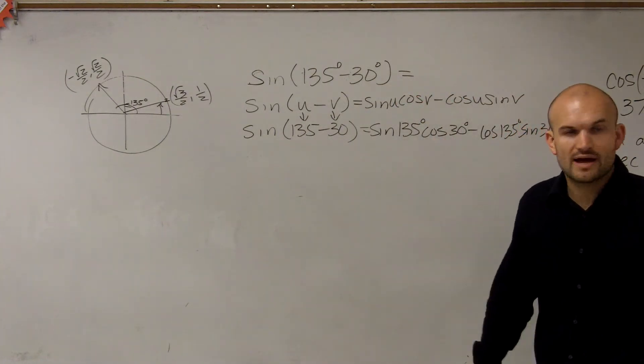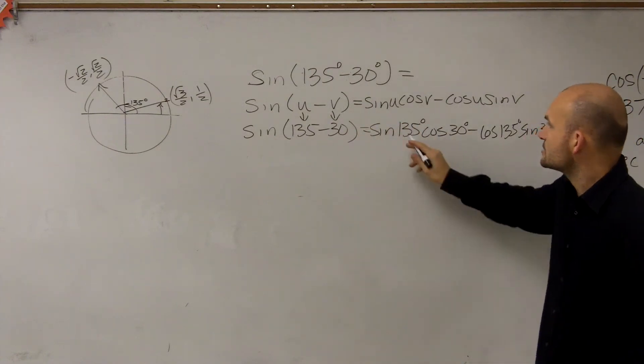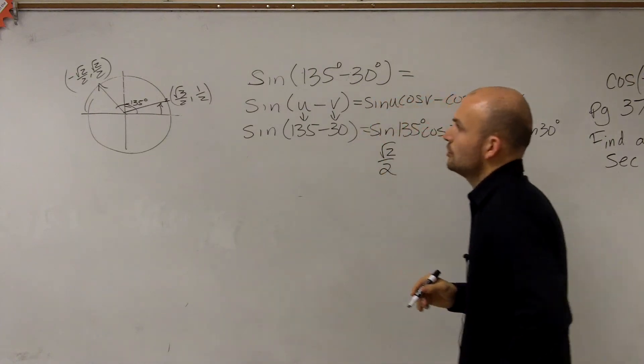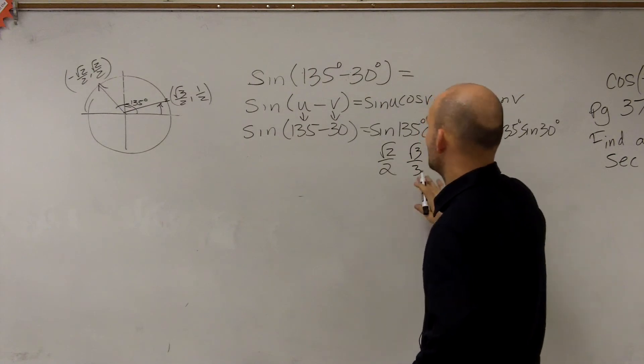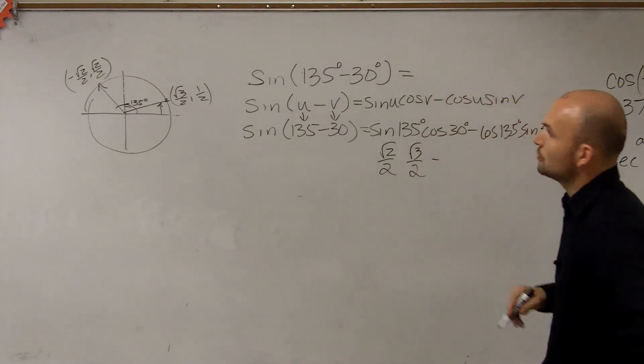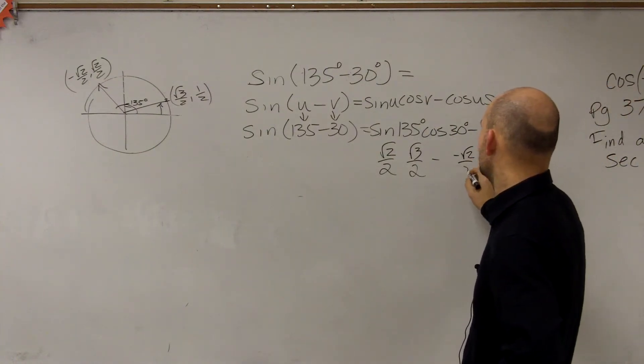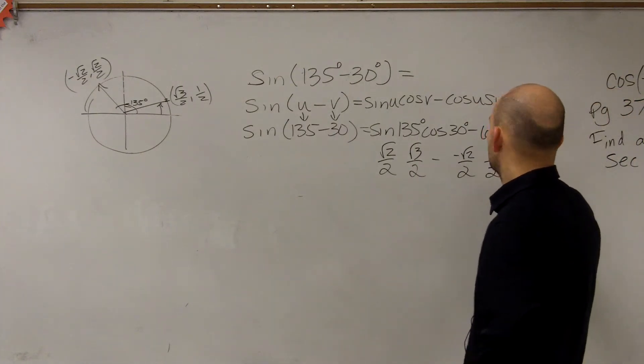So now let's just go and evaluate. Remember, we're just doing sine and cosine, so we're just doing the x and y coordinate. So the sine of 135 is going to be the square root of 2 over 2. Cosine of 30 degrees, square root of 3 over 2. Minus the cosine of 135 is a negative square root of 2 over 2. The sine of 30 degrees is 1 half.